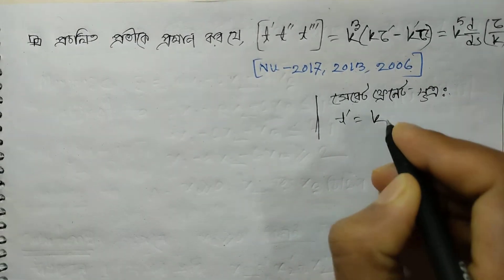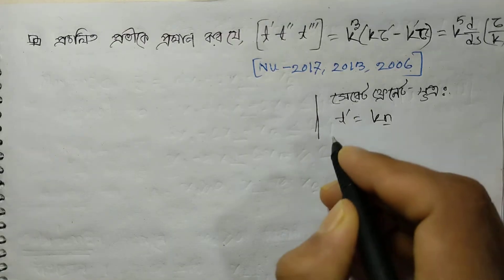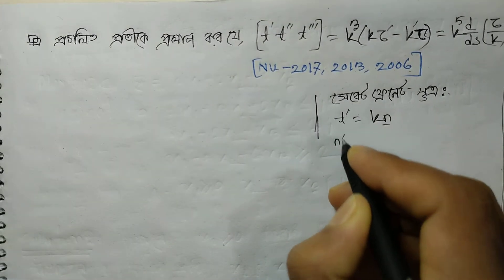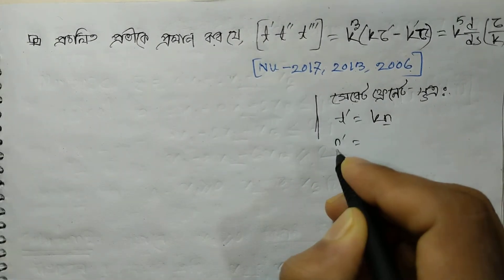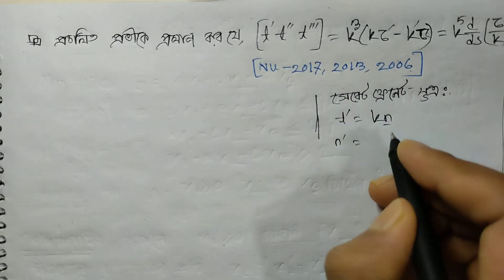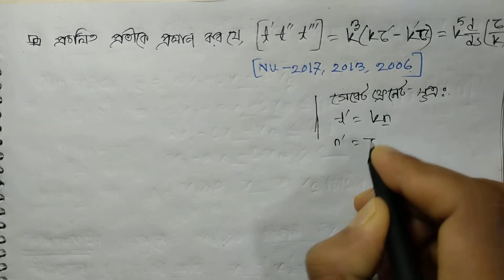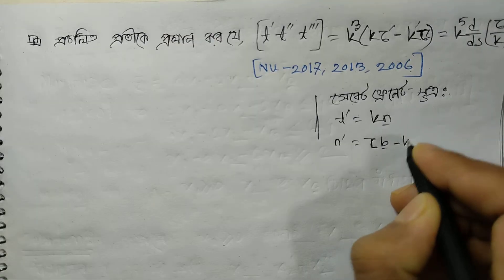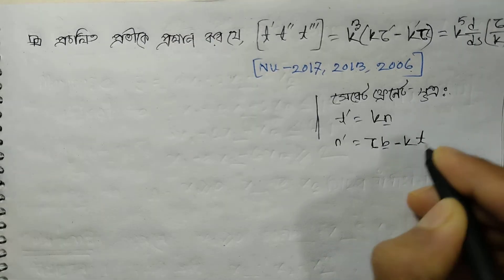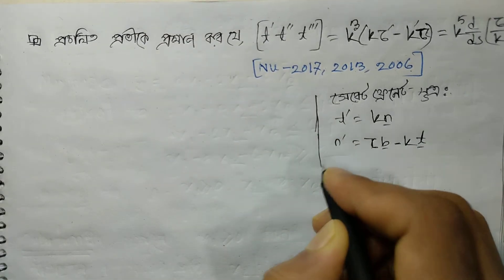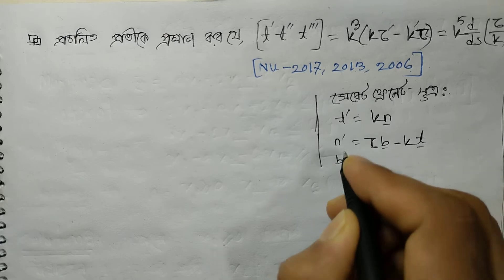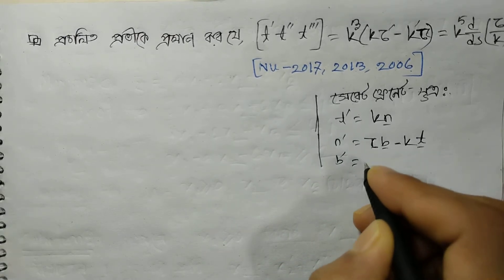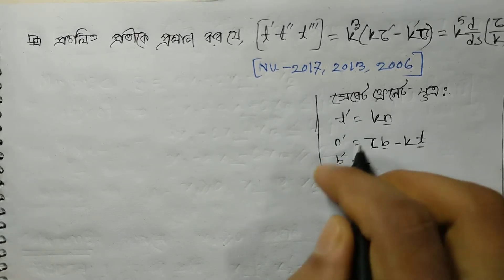This is where we will see the same expression. n is the vector in the TNB frame. n prime equals tau v minus kappa t. Also, b prime equals minus tau n.